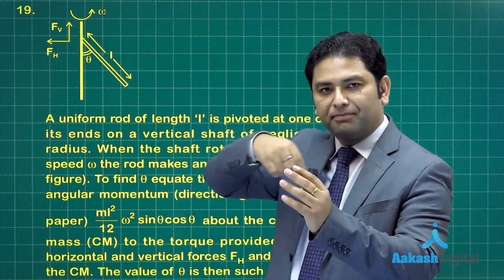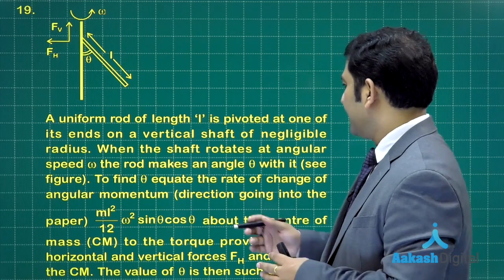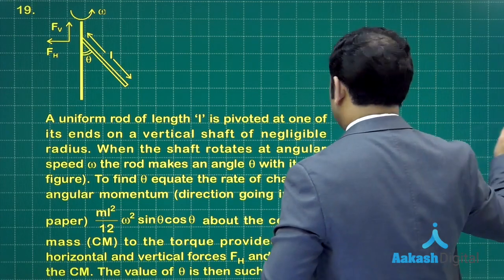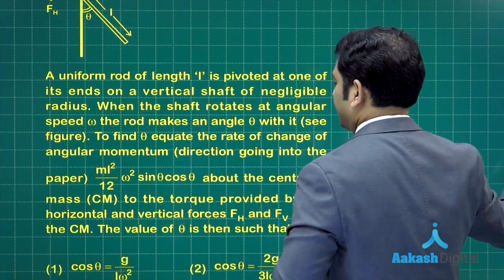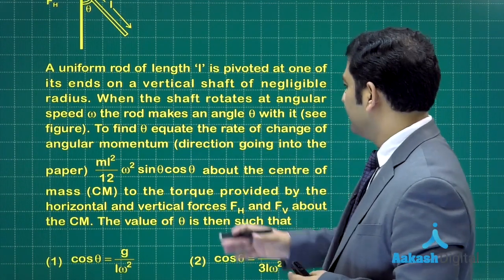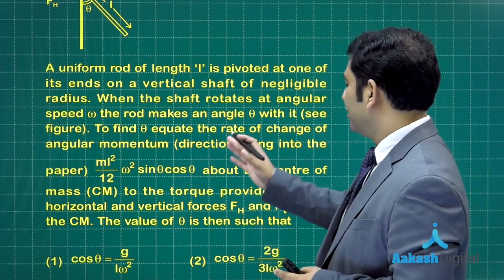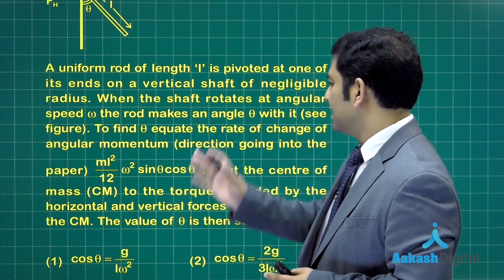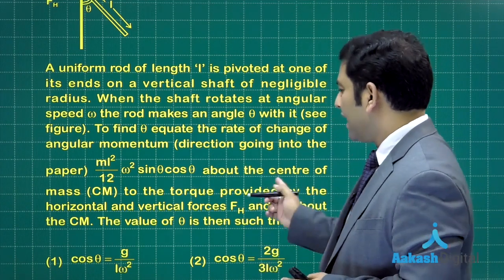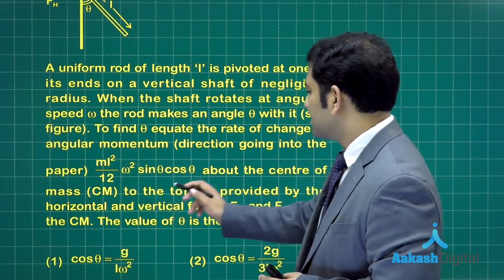It's something like a conical pendulum, but the entire rod has the mass. The question asks to find theta, the angle with respect to vertical, by equating the rate of change of angular momentum about the center of mass.